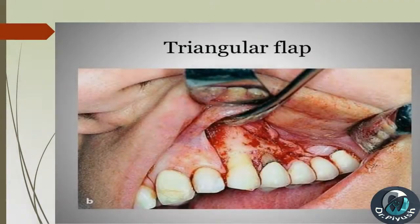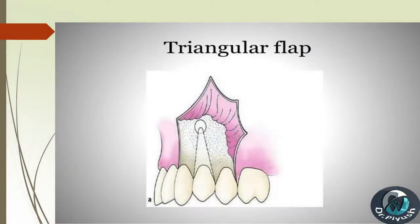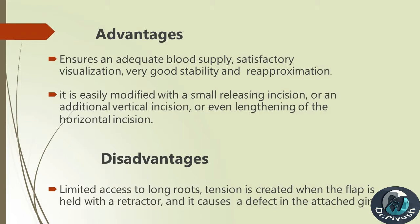Triangular Flap Advantages: ensures an adequate blood supply, satisfactory visualization, and very good stability and re-approximation. It is easily modified with a small releasing incision, an additional vertical incision, or even lengthening of the horizontal incision. Disadvantages: limited access to long roots, tension is created when the flap is held with a retractor, and it causes a defect in the attached gingiva.